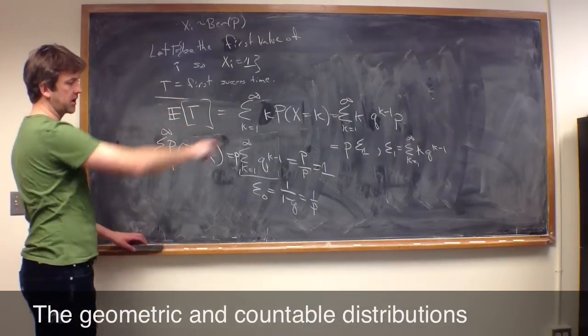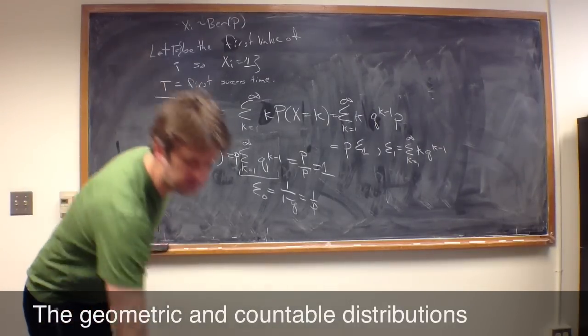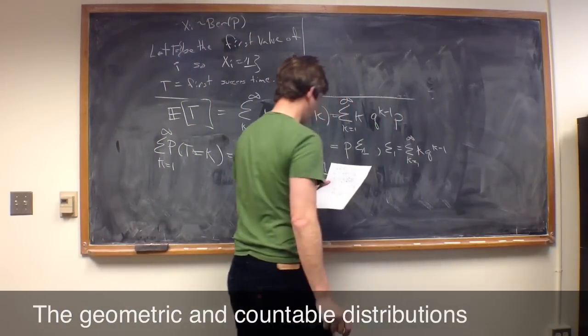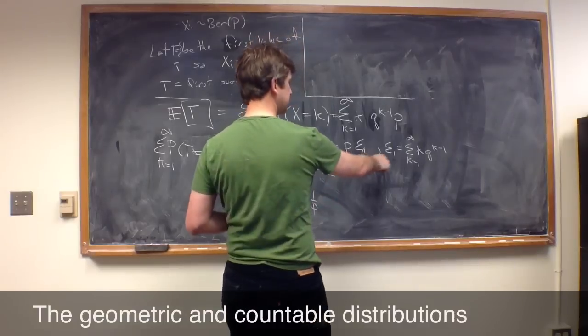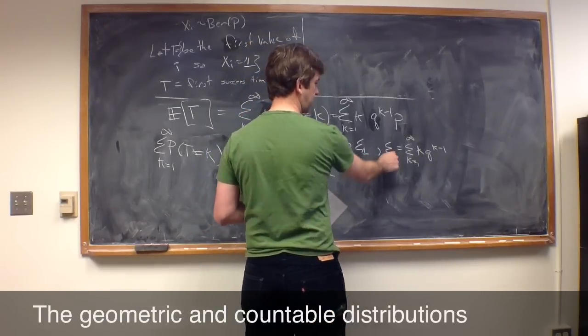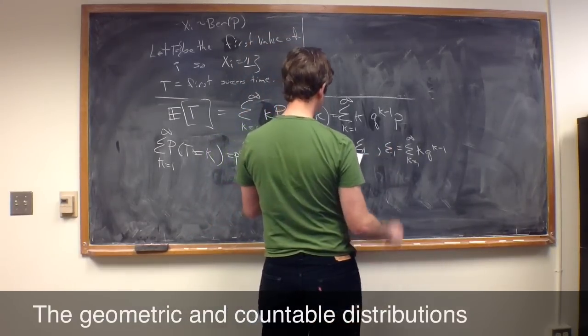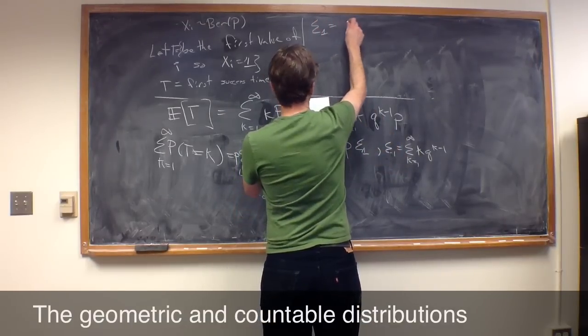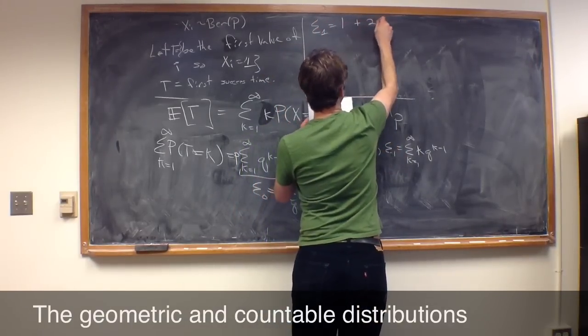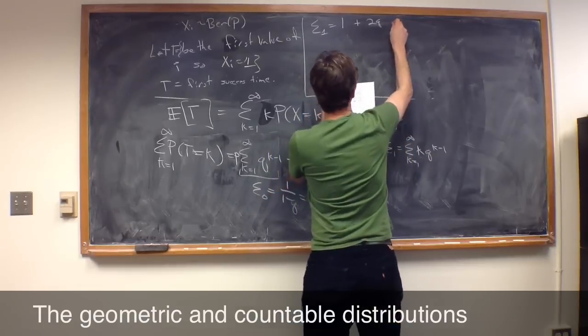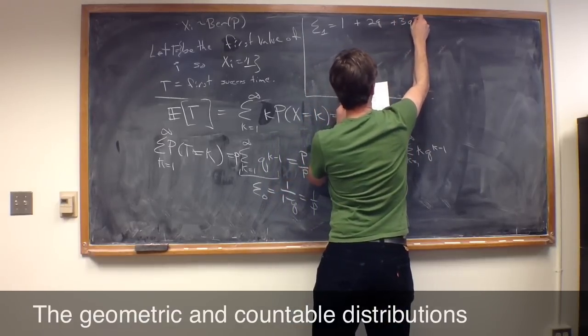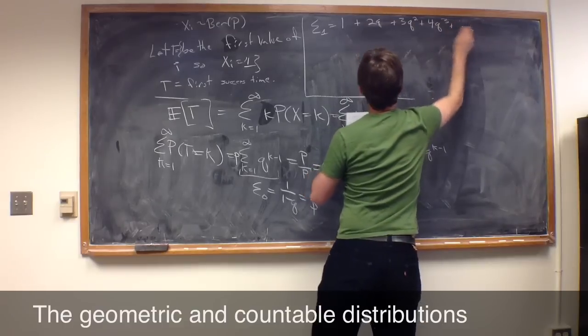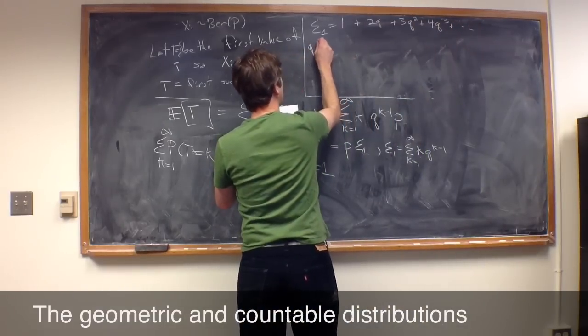But now, how are we going to go ahead and calculate this one? Well, to do that, we'll just use a little trick. So, let me go ahead and write the trick up here. So, what we're going to do is we'll take this definition of sigma 1. We want to calculate what sigma 1 is equal to. So, sigma 1 is 1 plus 2Q, I'm just writing out this definition, plus 3Q squared plus 4Q cubed, and so on.